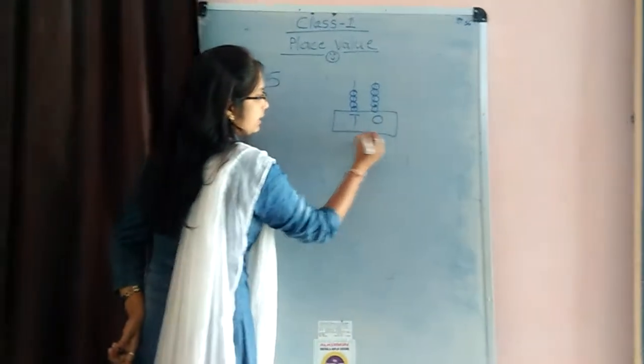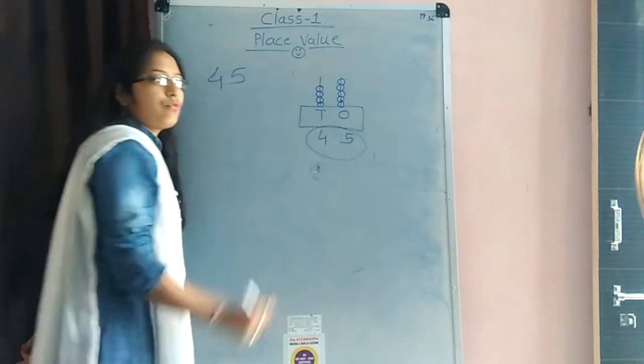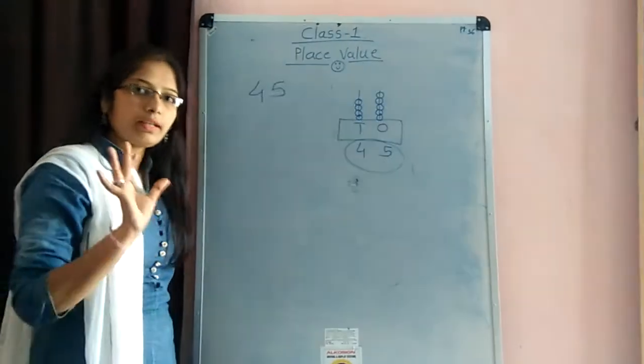So, ye ho gaye, in 1s place, there is a 5. In 10s place, there is a 4. So, ye ho gaye, 45. Understand?